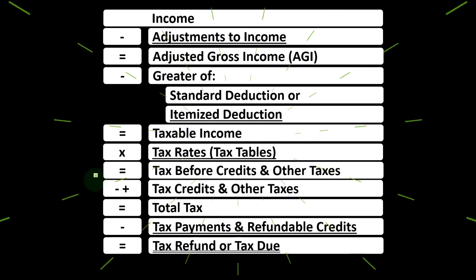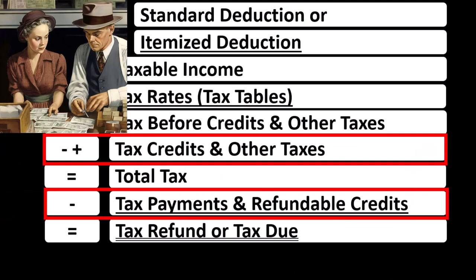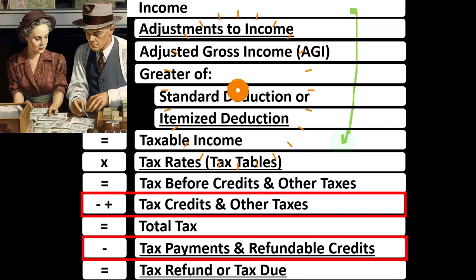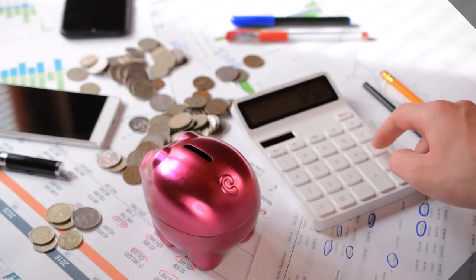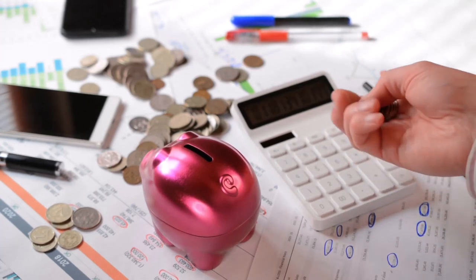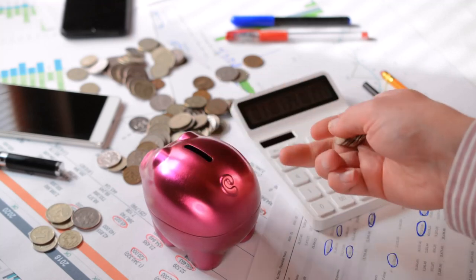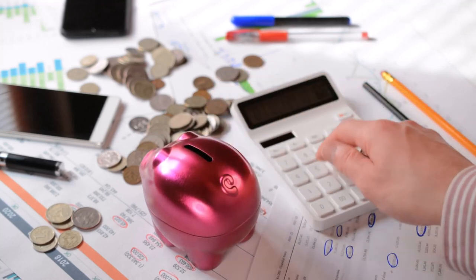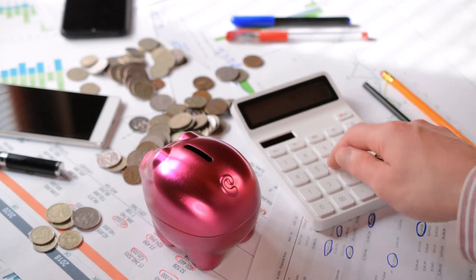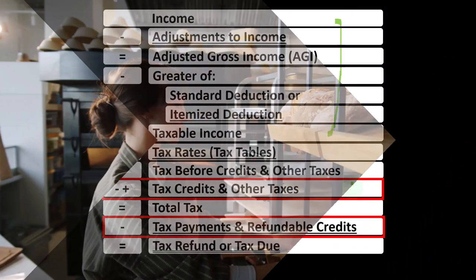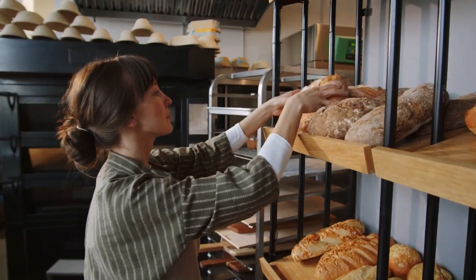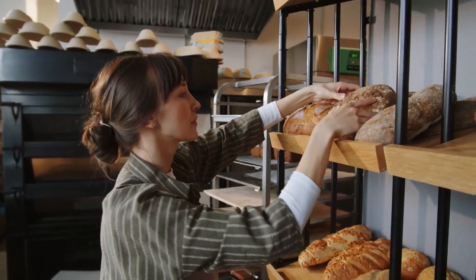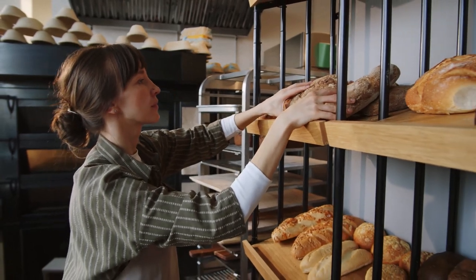Looking at the income tax formula, we're in the credit area. The first half of the income tax formula is essentially an income statement, where the bottom line is taxable income. We then take taxable income to calculate the tax using the progressive tax system to get to the tax before credits and other taxes. Then we're at the credit location, and deal with payments like estimated tax payments or withholdings to get to the tax refund or tax due.